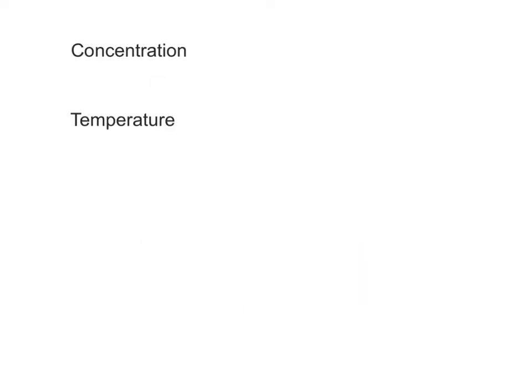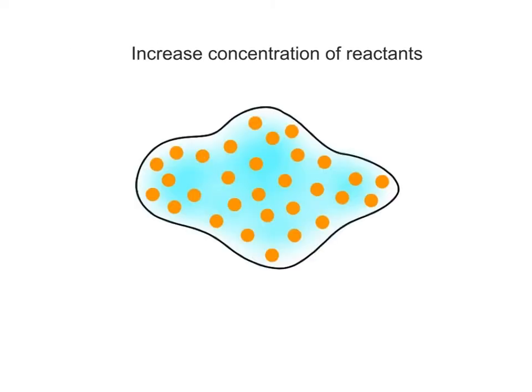There are two important factors that influence the chances of starting a chemical reaction: concentration and temperature. One way to increase the number of collisions between the atoms of reactants is to increase the concentration of the reactants.